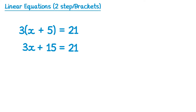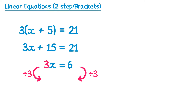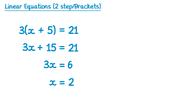To solve this we look at the plus 15 first. The inverse operation is to subtract 15. On the left hand side we have 3x, and on the right hand side 21 take away 15 is 6. We then deal with this 3 by dividing by 3 on both sides. Dividing by 3 on the left gives x, and dividing by 3 on the right gives 2. So the solution to this one is x equals 2.